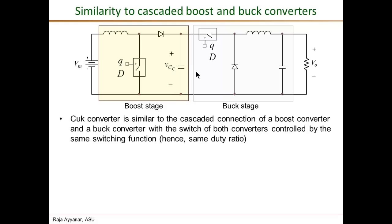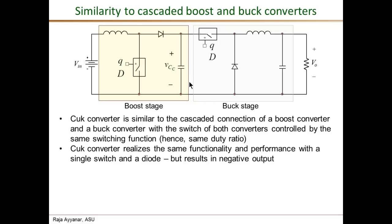With this control, the Ćuk converter is very similar in structure, operation, and performance to the cascaded topology. The key difference is that instead of two switches there is only one switch, which is a big advantage. Similarly, instead of two diodes there is only a single diode. The drawback — which may not apply to all applications — is that the Ćuk converter results in a negative output voltage with respect to the input ground.